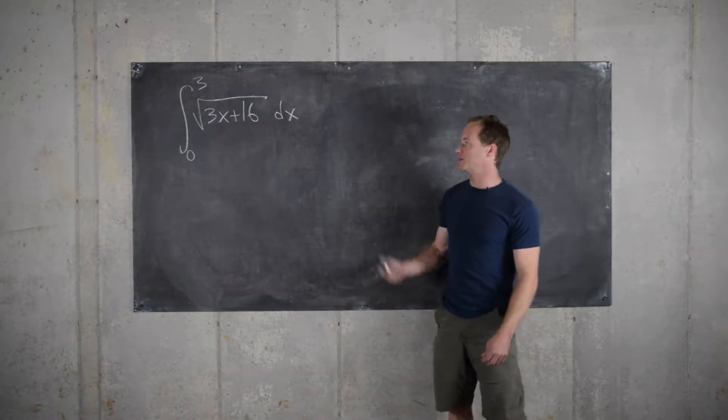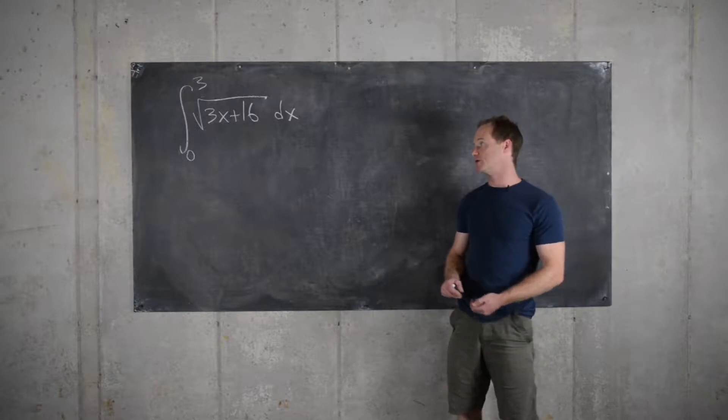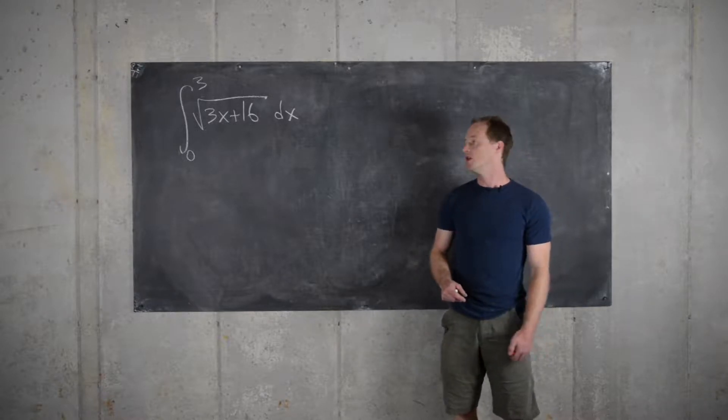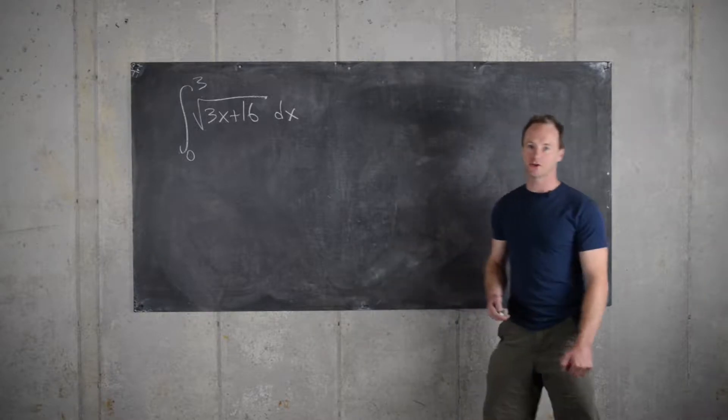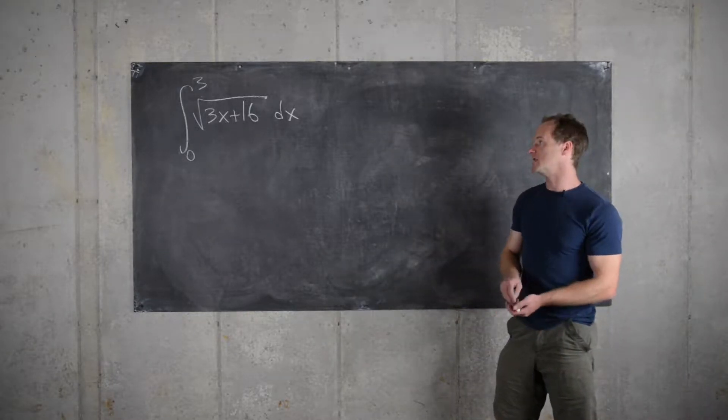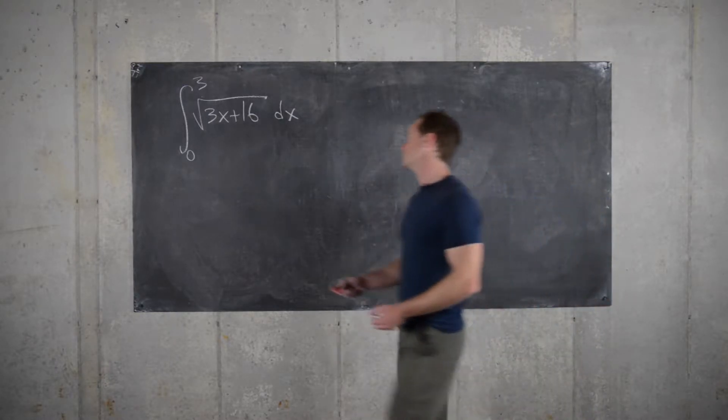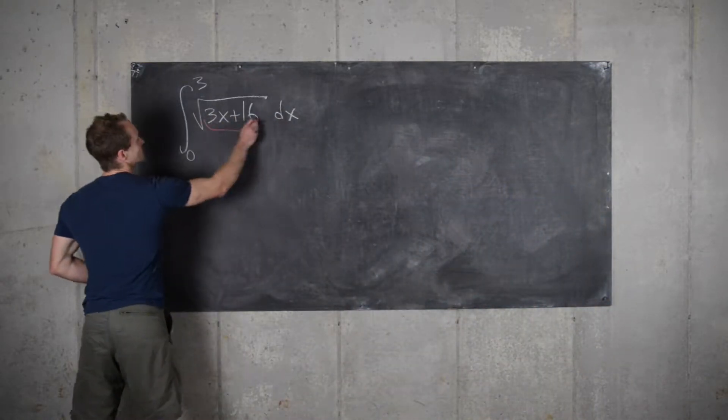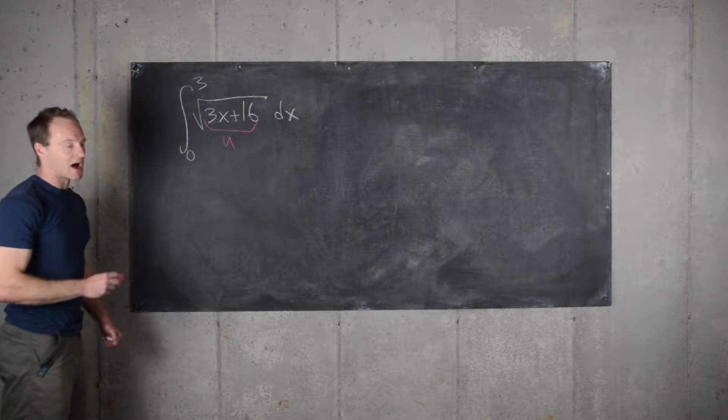Here's a problem that could probably be done just as easily without u-substitution, but we'll use u-substitution to present an example of doing one with a definite integral. A good choice for u is always the most deeply composed function, so in this case this would be an obvious choice for u.